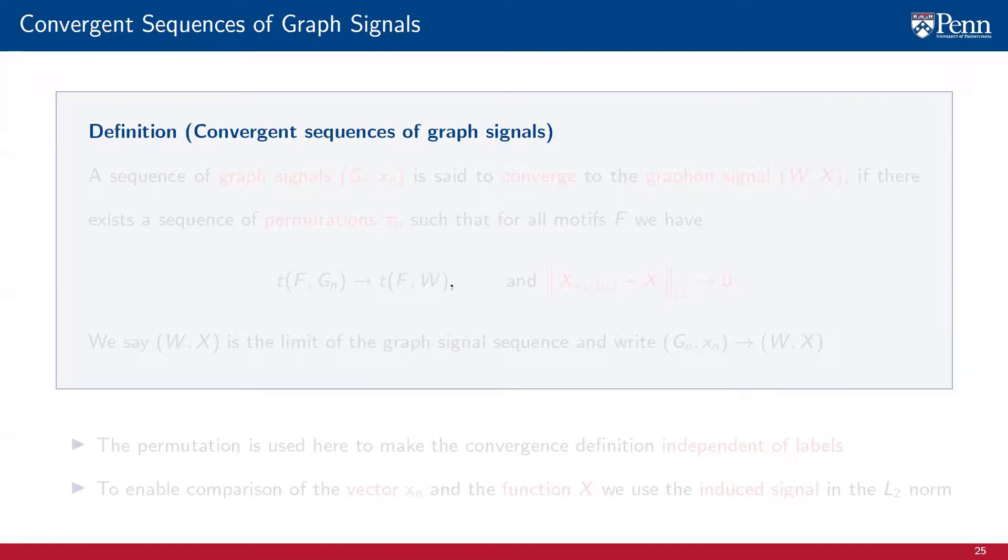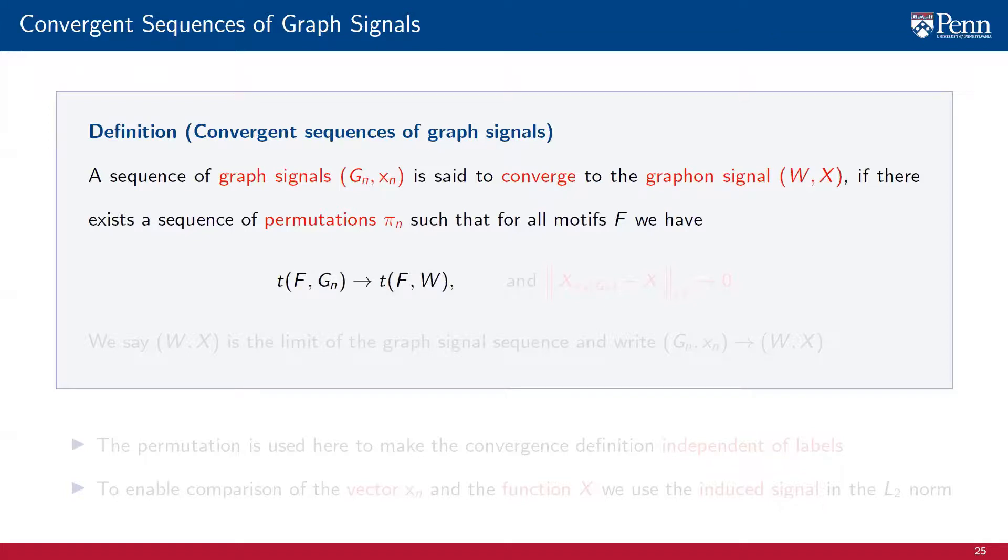We can now introduce graphon signals as limit objects of graph signals. A sequence of graph signals (G_n, x_n) is said to converge to the graphon signal (W, X) if there exists a sequence of permutations π_n such that for all motives F, the graph sequences converge to the graphon in the sense of homomorphism densities. Namely, the homomorphism density of the motive F into the graph G_n converges to the homomorphism density of motive F into the graphon W for all motives F. This is just convergence of the graph sequence to the graphon.